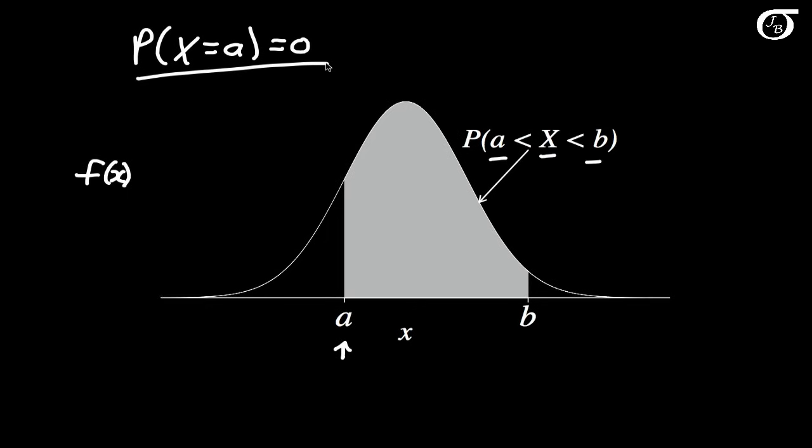So the probability that x is equal to a for any a is 0. So for any continuous probability distribution, the probability that x is equal to 3.12, that's going to be equal to 0. So from a practical point of view, it's only going to make sense to talk about the random variable x falling in an interval of values.